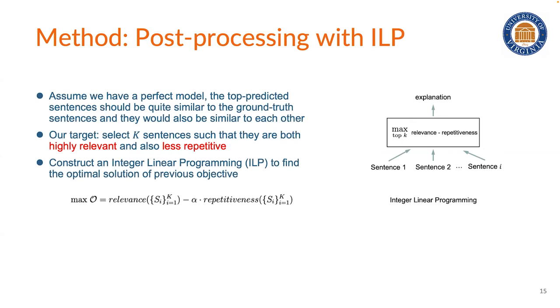So up to now, assuming we have a perfect model, the top predicted sentences should be quite similar to the ground-truth sentences, and they will also be very similar to each other. Recall that our goal is to generate perceivable text. So we should make sure that the selected sentences are both relevant and also less repetitive. To realize this objective, we construct an integer linear programming to find the optimal solution of this objective.